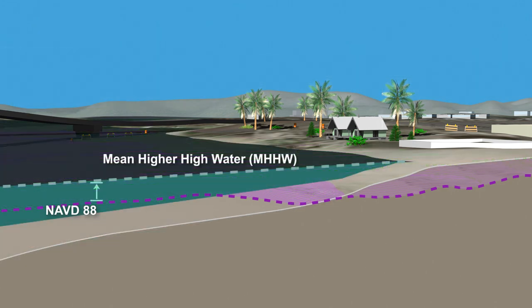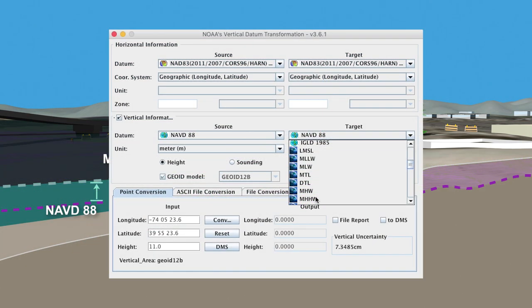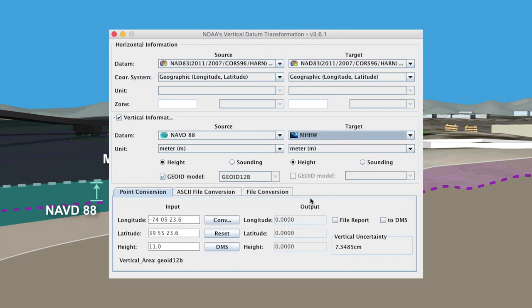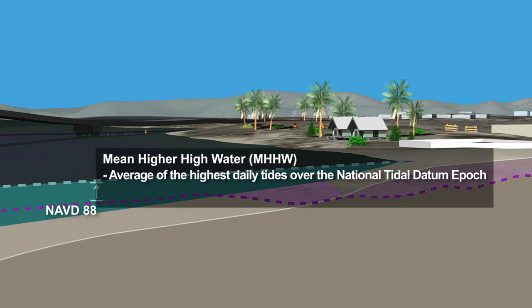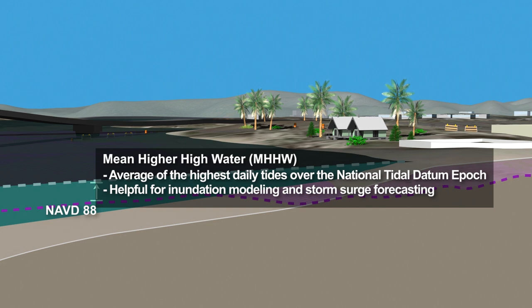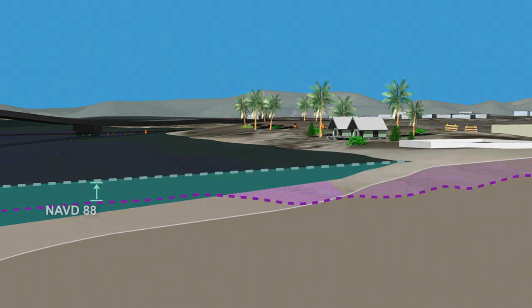VDatum can also transform our 11-meter NAVD88 height to a height referenced to local mean higher high water, or MHHW. MHHW is the average of the highest daily tides over the national tidal datum epoch. The mean higher high water datum is helpful for inundation modeling and storm surge forecasting.